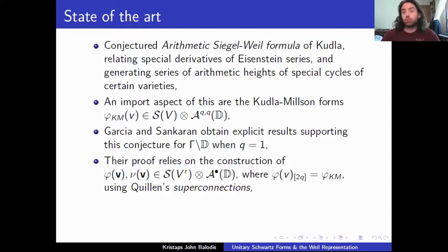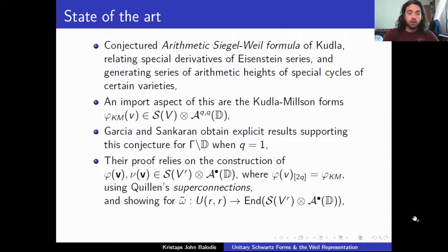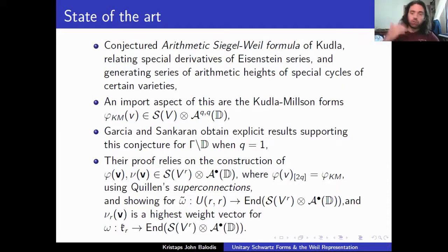And the way in which these forms are constructed is they use Quillen's theory of super connections. So we're going to be saying what that means in a moment. And an essential step in their proof is what they do is they take this special representation of the group U(r,r), called the Weil representation. So it acts on this tensor product space. And okay, whenever you have a Lie algebra or a Lie group representation, there's some sense in which you can differentiate that and obtain a representation of its corresponding Lie algebra on the same space.